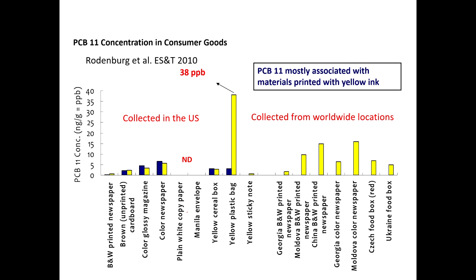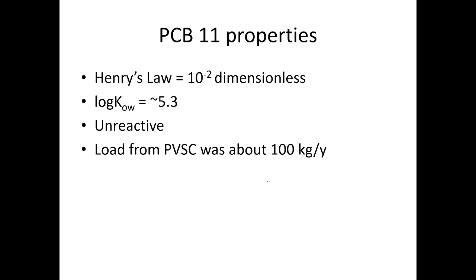PCB 11 is coming from everywhere. In a 2010 paper, samples pulled from a recycling bin — various printed materials from the US and around the world — all contained PCB 11. PCB 11 has a Henry's law constant of about 10⁻² (dimensionless), log K_OW of 5.3, and we'll assume it's unreactive. The wastewater treatment plant PVSC was taking process waste from a company making diarylide yellow pigments, and the load coming out was about 100 kg/year.